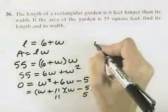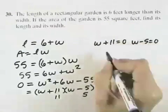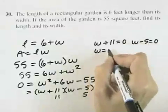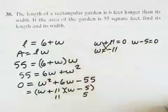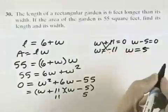Well, that means that either W plus 11 equals 0, or W minus 5 equals 0. If I subtract 11, I'd get a width of negative 11. I know I can't have a negative width. So if I add 5, I get a width of a positive 5.